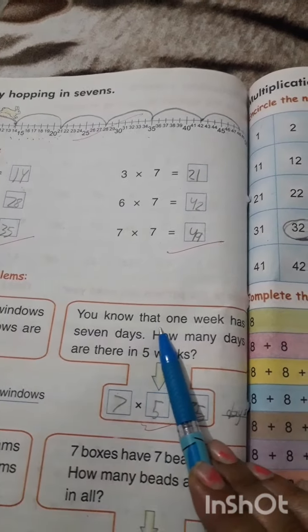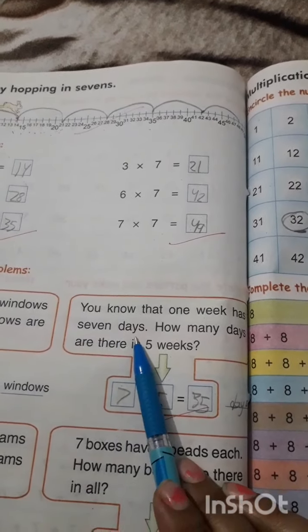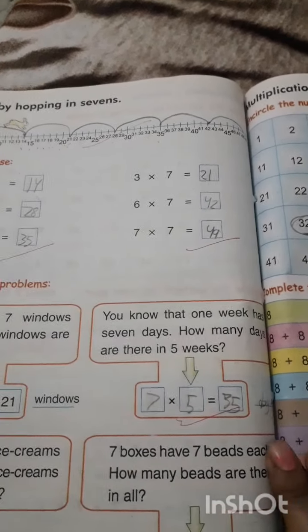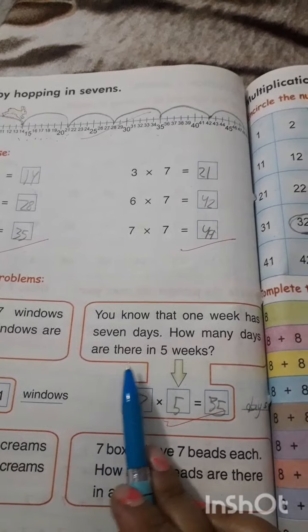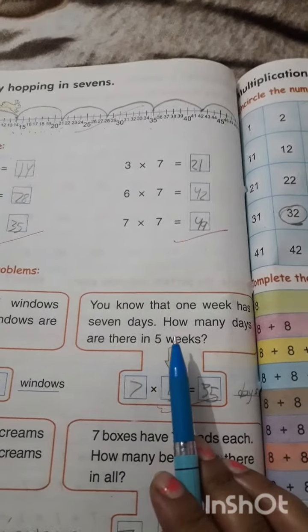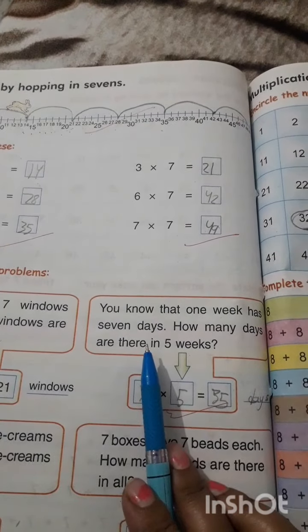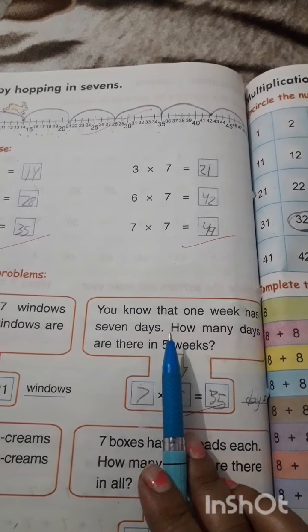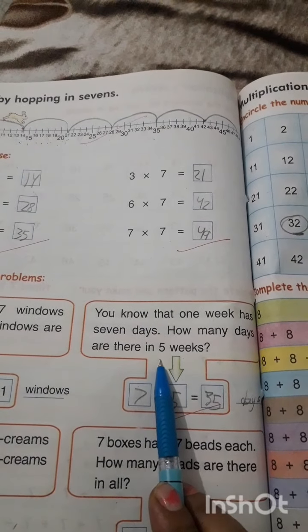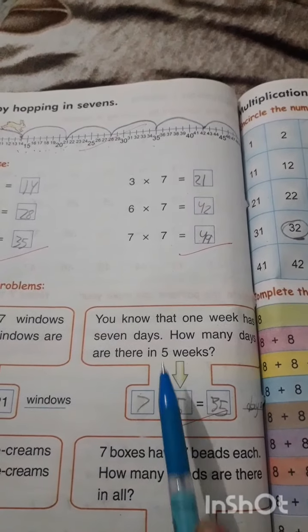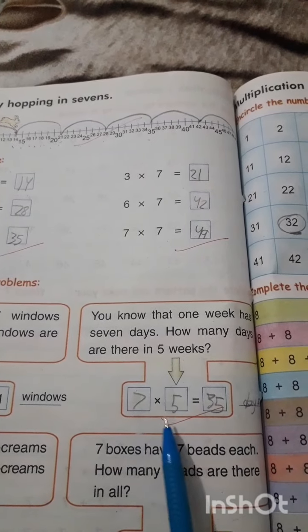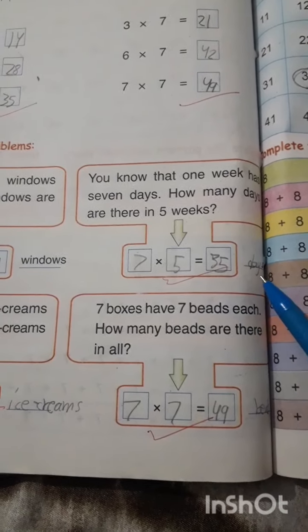You know that 1 week has 7 days. How many days are there in 5 weeks? Total days in 5 weeks. 7 multiply 5. 7 times 5 is 35 days.